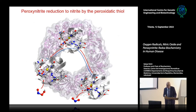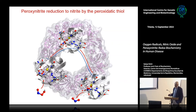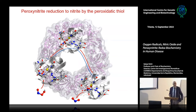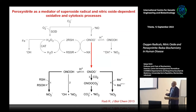The whole catalytic cycle: ONOOH — peroxynitrous acid, the conjugate acid of peroxynitrite anion — reacts with the peroxidatic thiol to form a transitory intermediate that leads to sulfenic acid and nitrite. This is a way to catabolize peroxynitrite in vivo, but it leaves the enzyme oxidized, which can then promote secondary redox reactions.